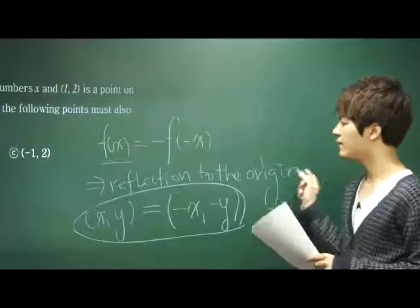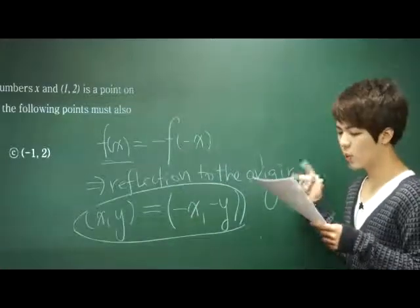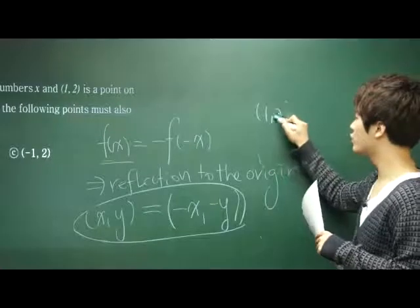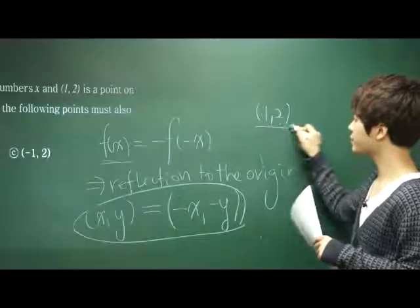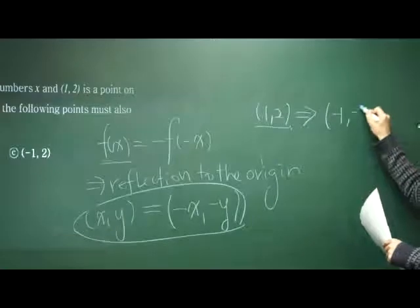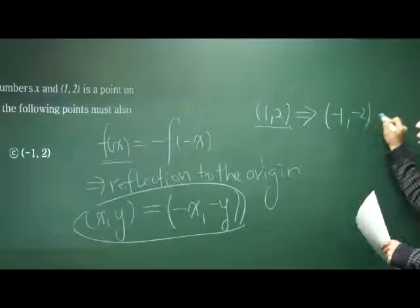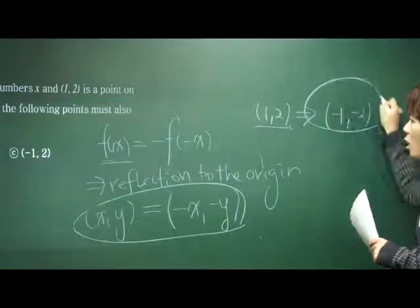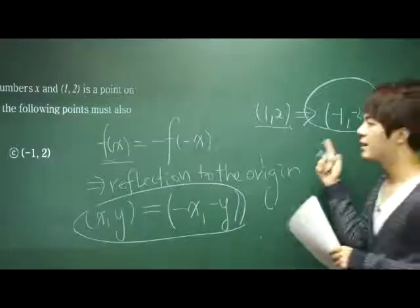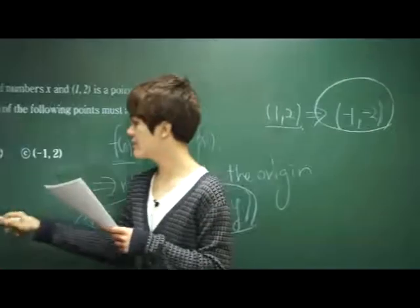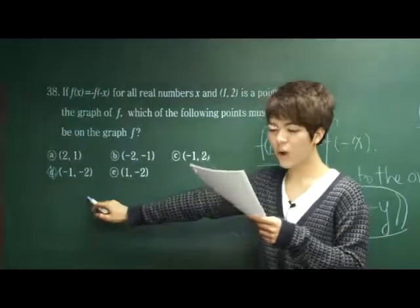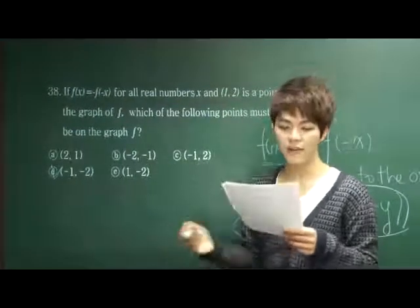Because it is a reflection to the origin. In this case, we are given the point (1, 2). Therefore, (-1, -2) will also be on the graph f. In this logic, the answer choice is D — negative 1 comma negative 2 will also be on the graph f.